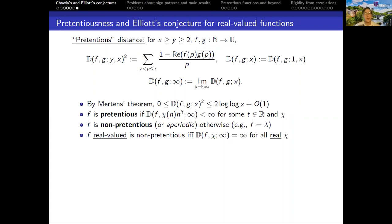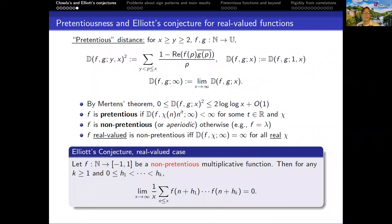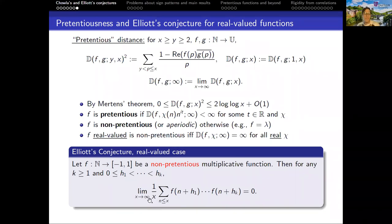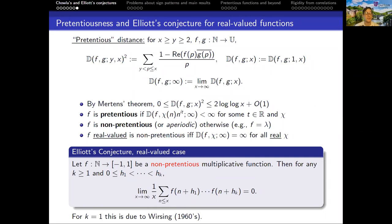For most of the talk I'll focus on real-valued functions, in which case non-pretentiousness is just the same as saying that the distance between f and any real Dirichlet character tends to infinity. Elliott's conjecture for real-valued functions can be stated as follows: if f is a non-pretentious real-valued multiplicative function, then all of its averaged autocorrelations tend to zero. In particular, if we take f to be the Liouville function, this recovers Chowla's conjecture. This is still open for all k greater than or equal to 2. If k equals 1, this is a generalization of the prime number theorem due to Wirsing, in this case for real-valued functions.